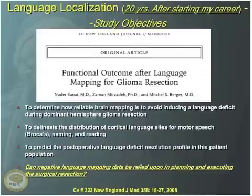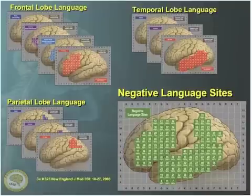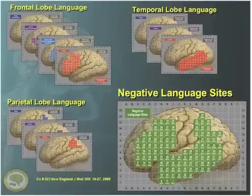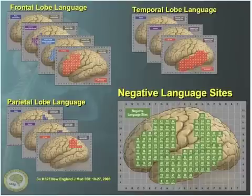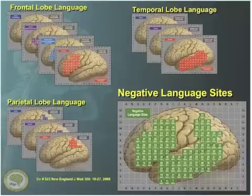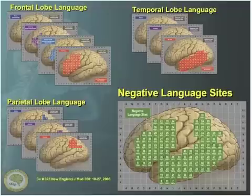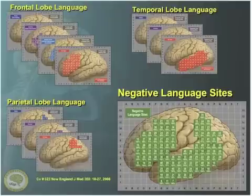Looking at the cumulative data, you can see the number of times we mapped sites in the superior temporal gyrus and the likelihood of them being negative for language. You might think this doesn't make sense, because you've always been taught that patients in the superior temporal gyrus of the dominant hemisphere are likely to have regions connected to comprehension. But that's not necessarily the case, especially in patients with low-grade gliomas who, over time, can develop areas of cortical plasticity and reorganization. Just because it's in the perisylvian network doesn't mean you can't aggressively resect it if you use these mapping techniques.